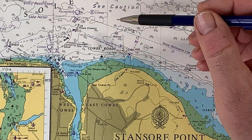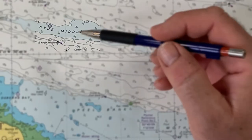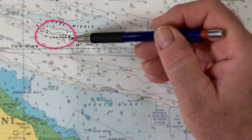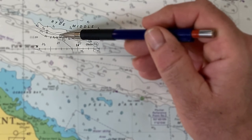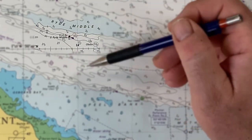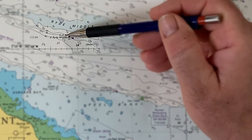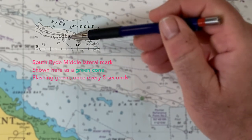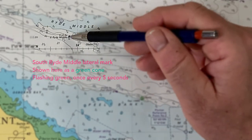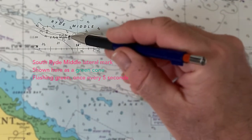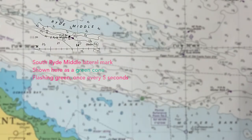The chart also shows lights on buoys. For example, South Right Middle is cone-shaped with a G underneath, so we know it's a green lateral mark. It says Fl.G.5s, which means flashing green every five seconds — one flash of green every five seconds. At night we would be looking for that and would know from the chart exactly which mark we're looking for.